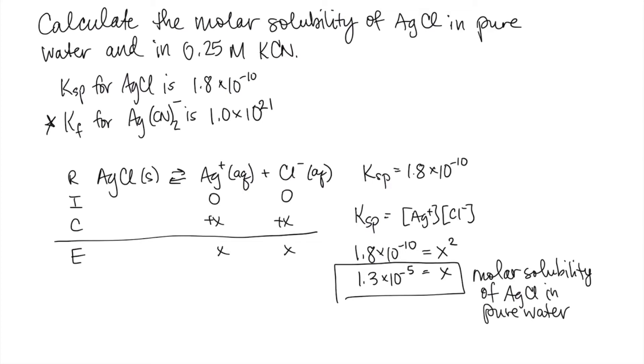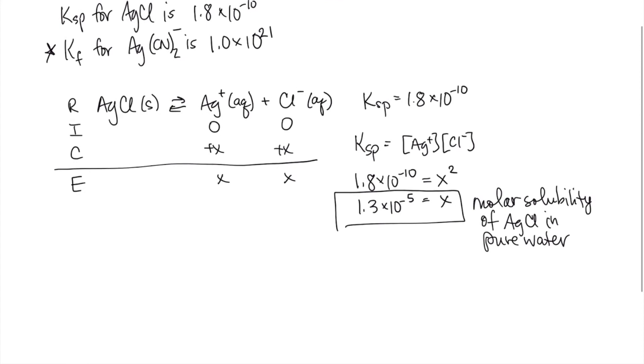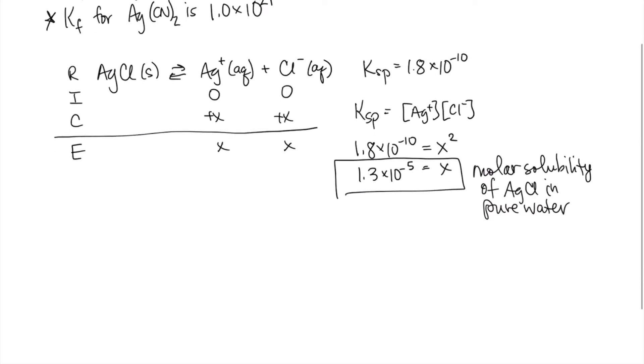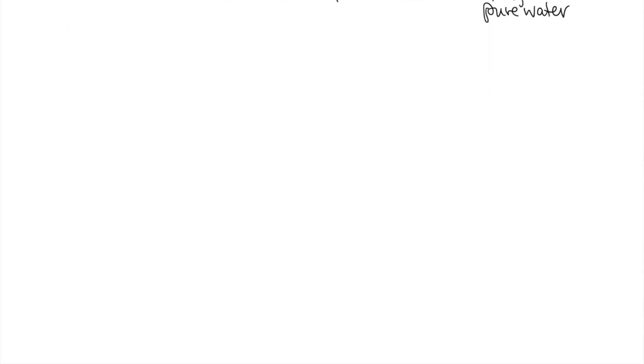Okay, now the second part of the question asks us to calculate what's the solubility in 0.25 molar KCN, potassium cyanide. So we're going to actually have to figure out what the overall reaction is. So in this case, we have our Ksp reaction, AgCl makes Ag+ plus Cl-. And then we also have the formation reaction where the silver ions can react with cyanide ions and form the complex ion Ag(CN)2 minus.